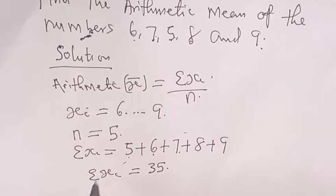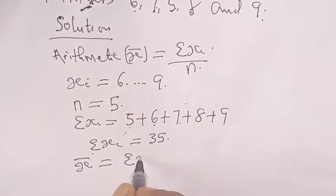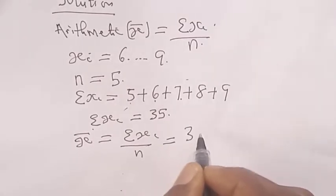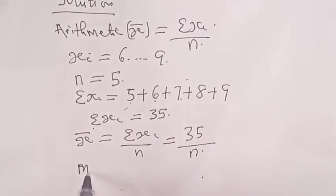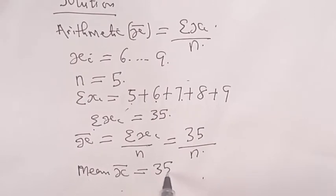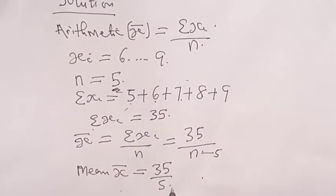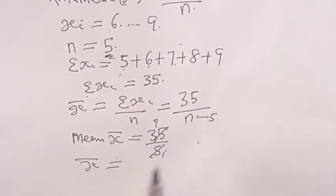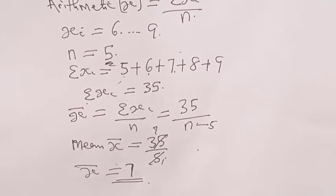Then our mean now. This is the direct method. Remember. Our mean x̄ is equal to summation xi over n, which is equal to 35 over n. That is, our mean x̄ is equal to 35 over 5. This is the direct way, and we all know how to calculate our mean with this.